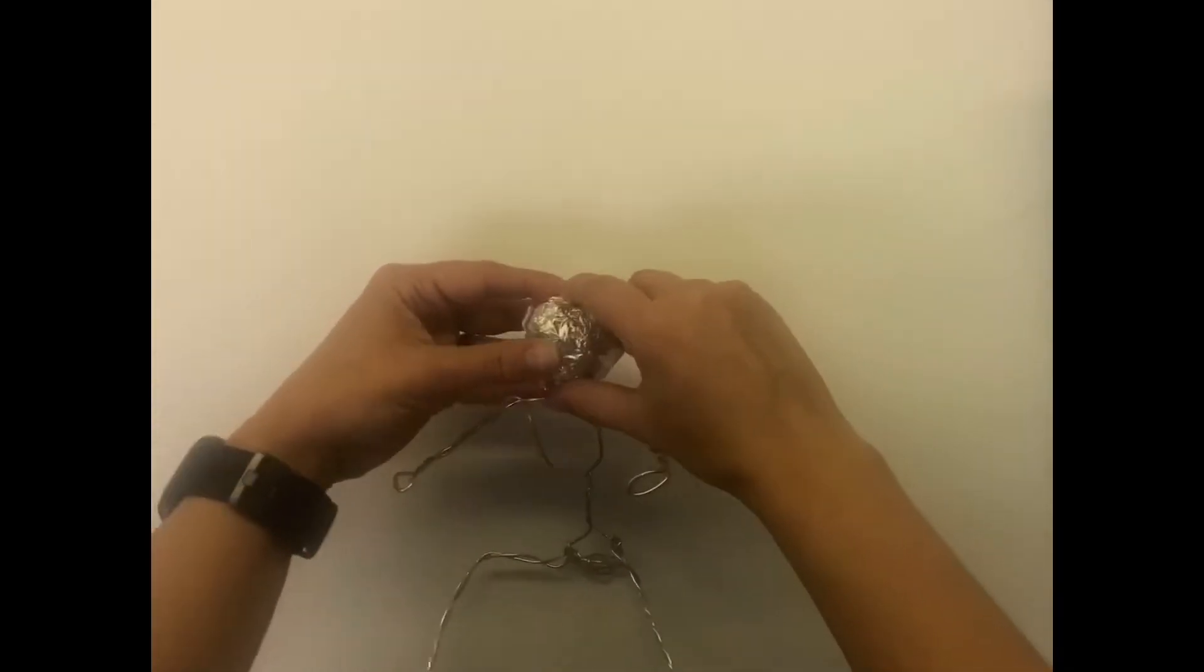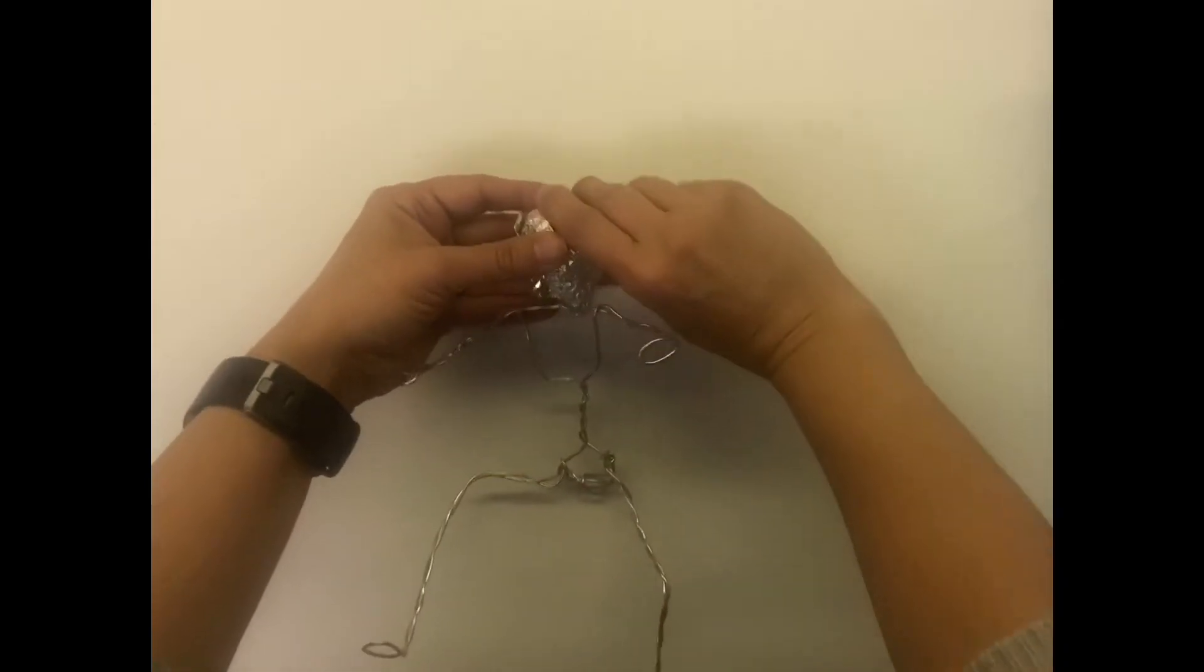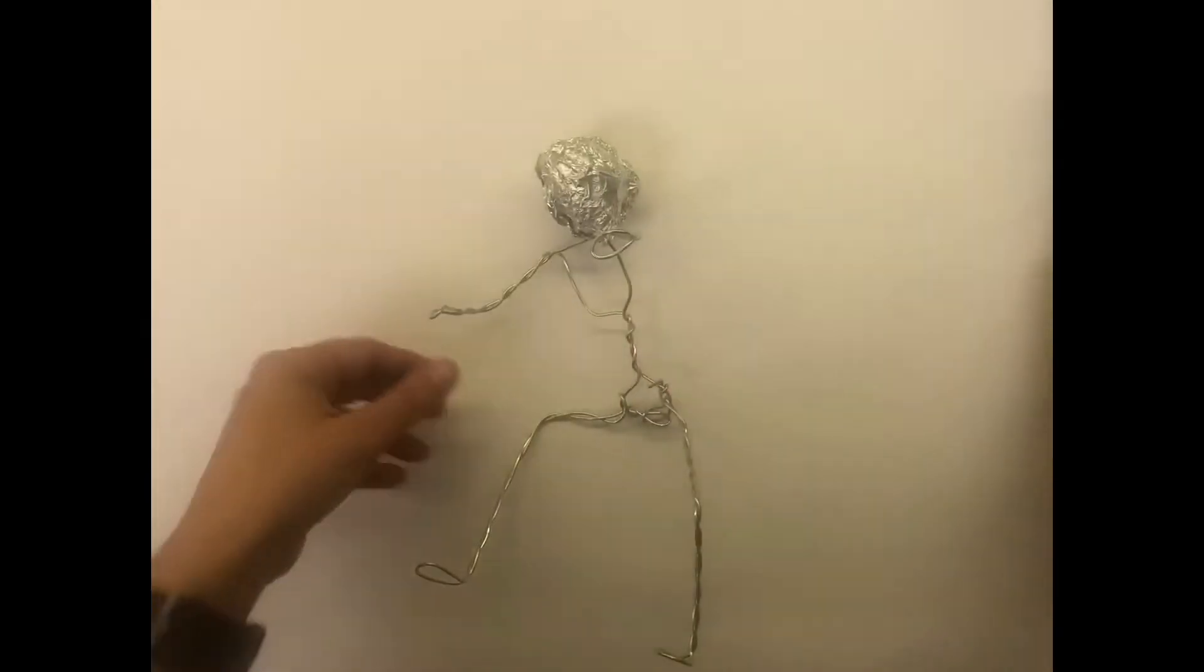Don't worry so much about the tails right now or these little loose pieces. We will tape them down in the next video. So I'm gonna do the chest piece next. So again start with a sheet of foil.